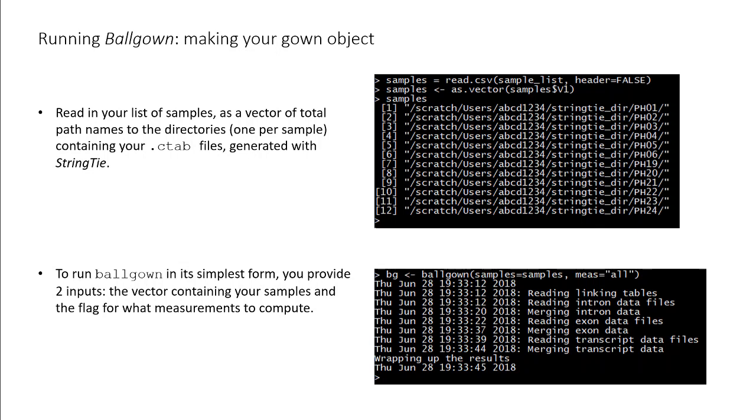Now, all we have to do is call the ballgown function with this list of directory paths as an input and specify the mesh parameter, which indicates what to calculate. The output of the function is what's called a gown object, which we are assigning to the variable bg.